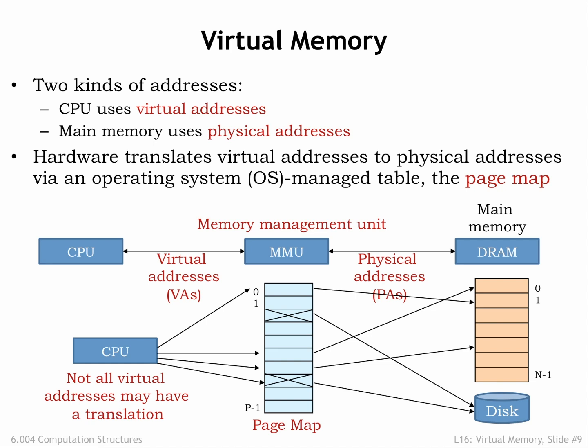For example, we could arrange to run multiple programs in quick succession by changing the page map when we change programs. Main memory locations accessible to one program could be made inaccessible to another program by proper management of their respective page maps. And we could use memory management exceptions to load program contents into main memory on-demand, instead of having to load the entire program before execution starts.